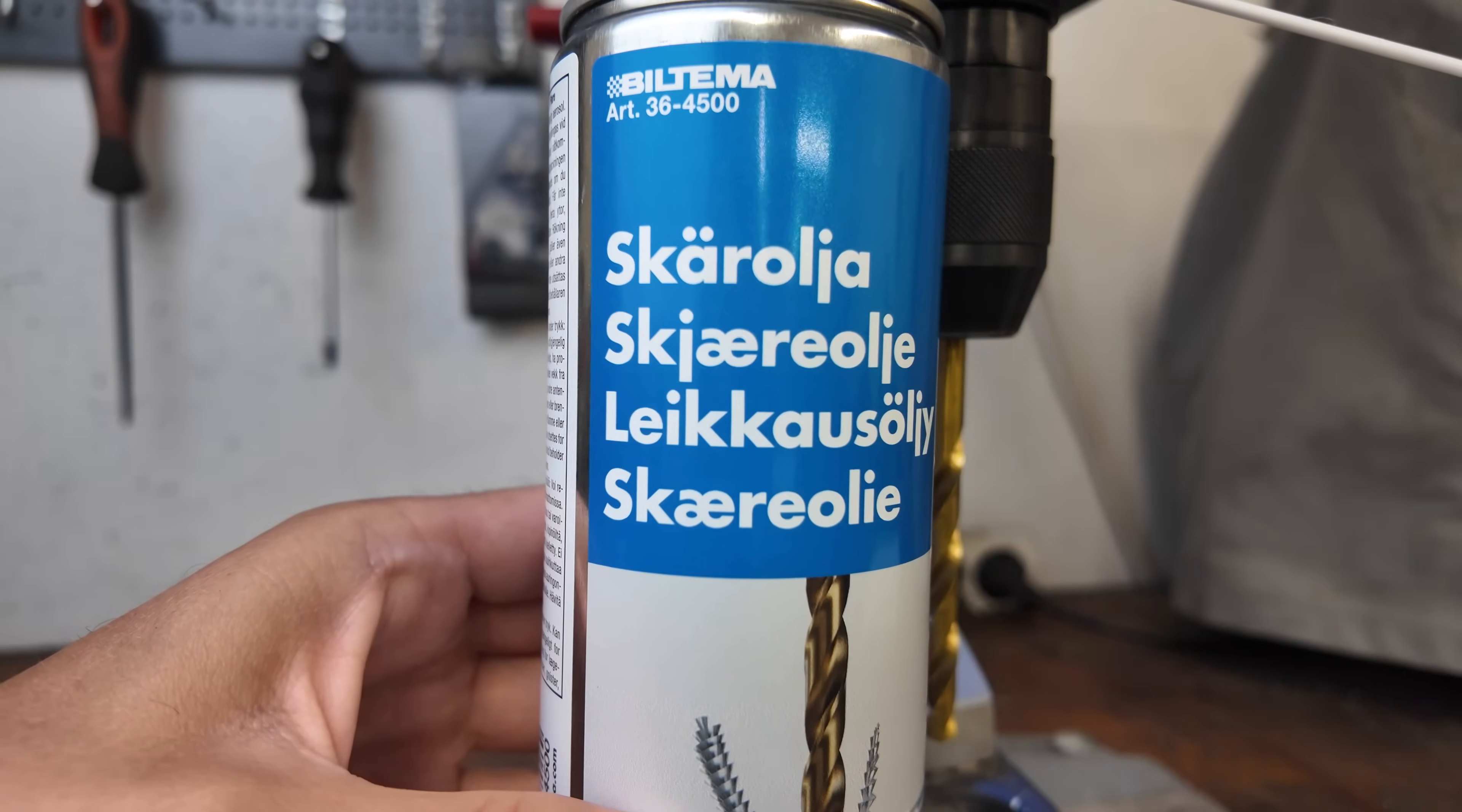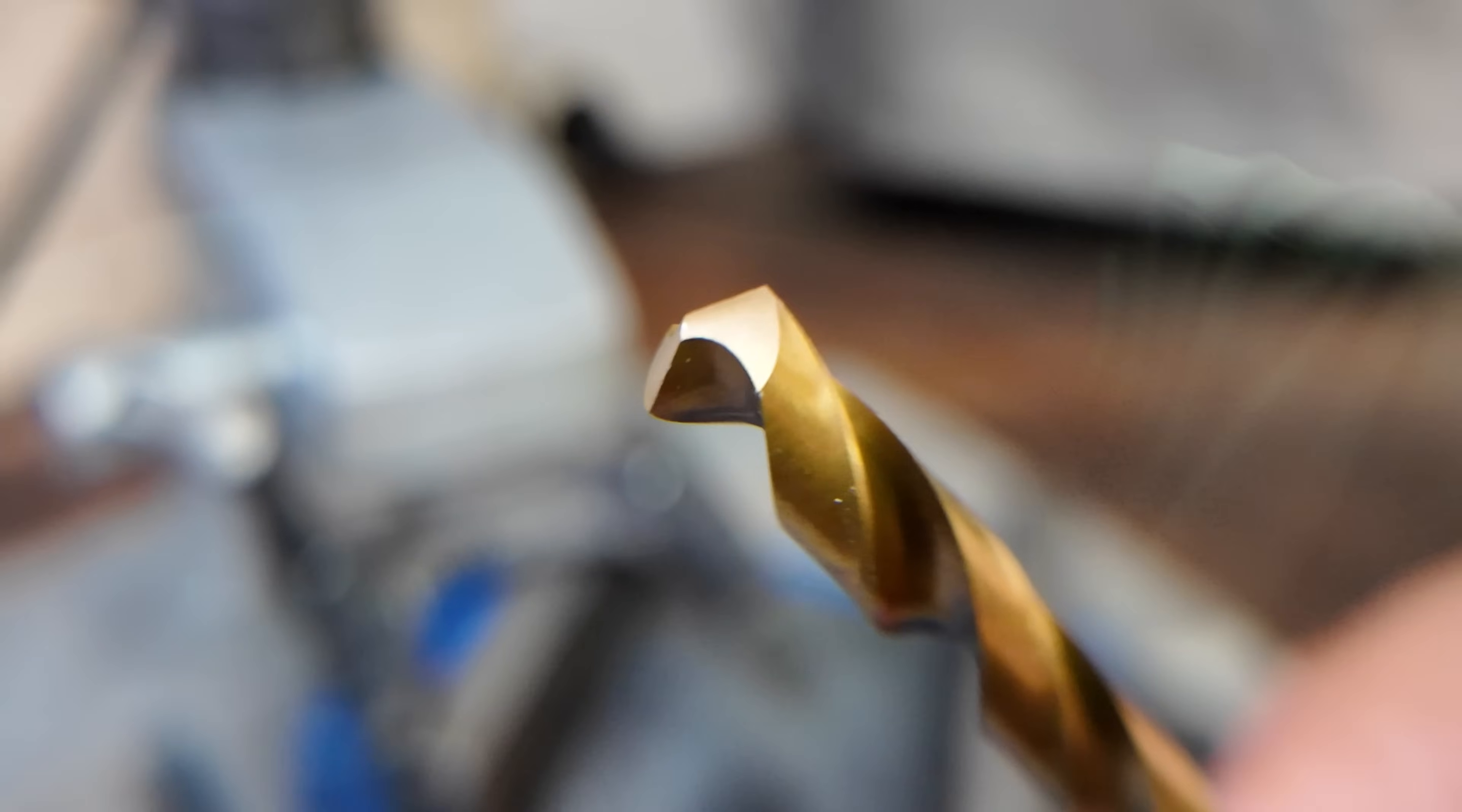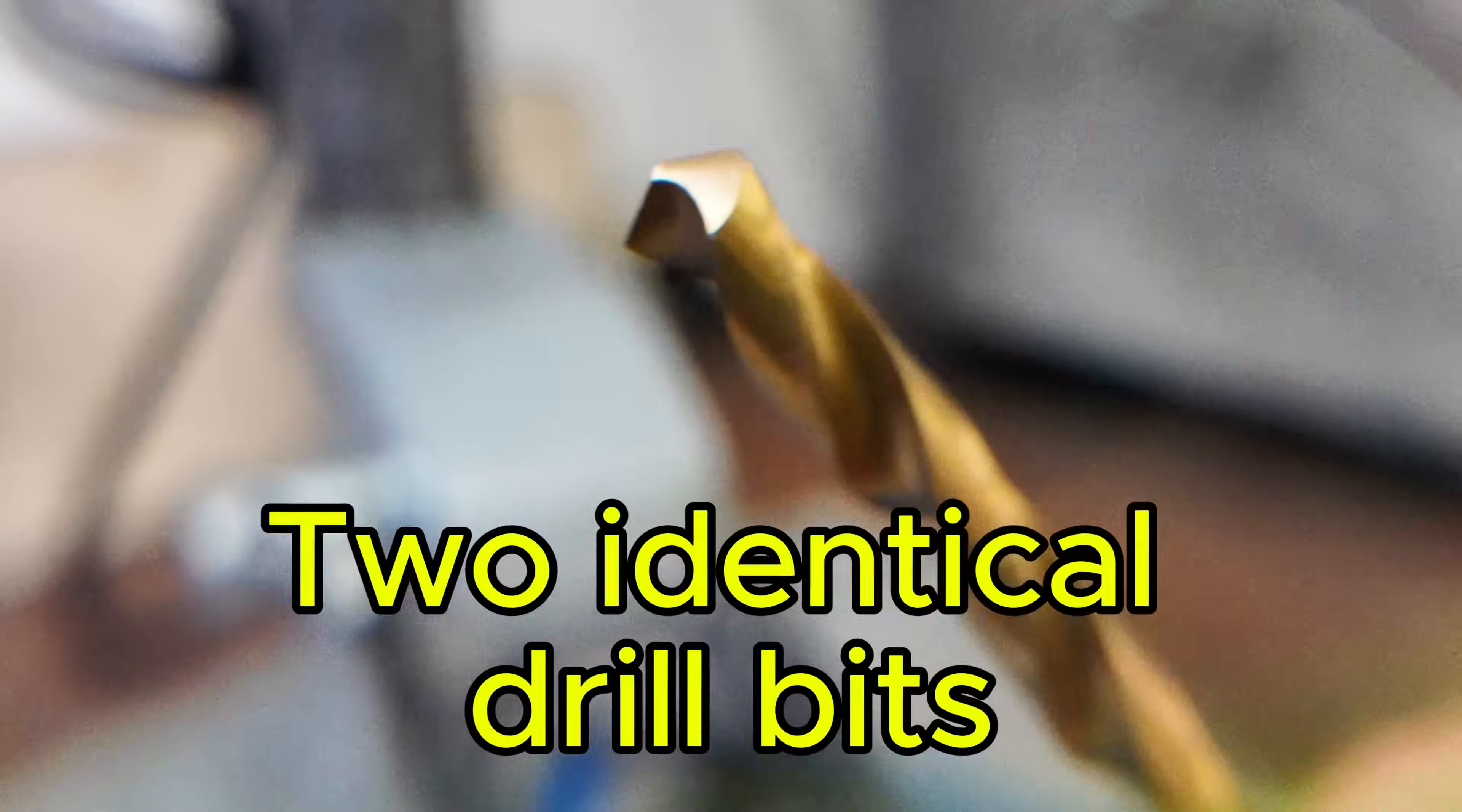Cutting oil comes from a cheap retail store. We're using the exact same amount for each hole drilled. This is a cheap drill bit from a retail store in Sweden - it has 118.5 degrees, and both are 5/16 of an inch.